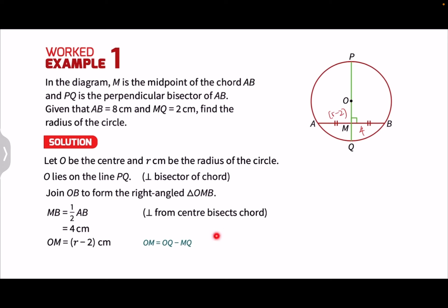So incorporating all this into our diagram, we'll obtain this. OB will be the radius of R cm, OM will be R minus 2cm, and MB will be 4cm. So observe that we now have the length of all three sides of this right angle triangle OMB.